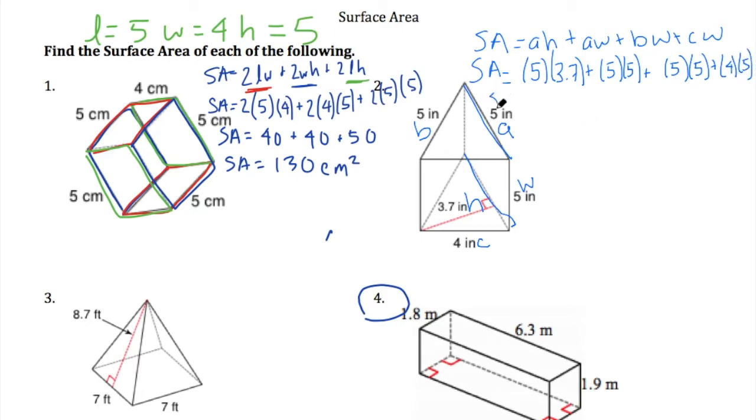Now, let's start evaluating. 5 times 3.7. That's 15 plus 35. So that's 18.5. Plus 25. Plus 25. Plus 20. So the surface area is 50, 70, 78 point, 88.5. 88.5. Don't forget your units. We have inches here. We're talking area. So we've ended up squaring that. So inches squared is our surface area for that triangular prism.